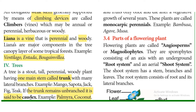What is a caudex? If the trunk remains unbranched, it is said to be a caudex. Most trees are branched, but in some plants there are no branches — for example, palmyra palm and coconut. In these plants, there is no branching, so the trunk is called a caudex.